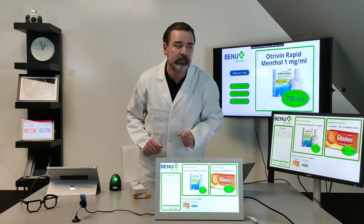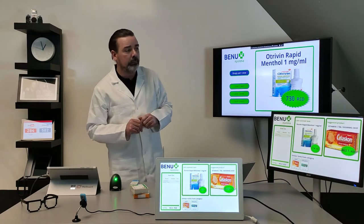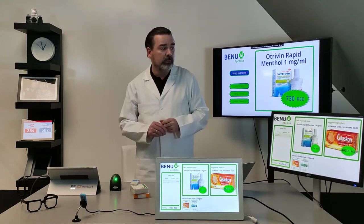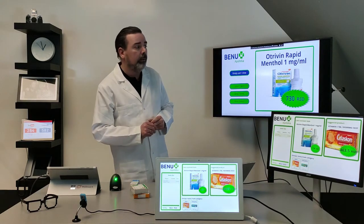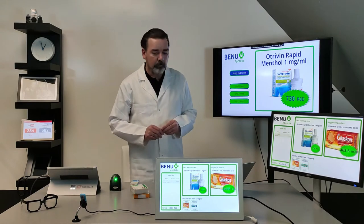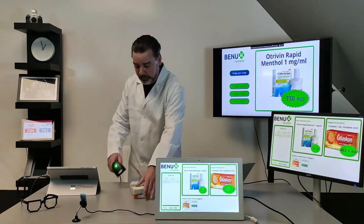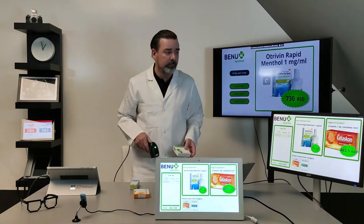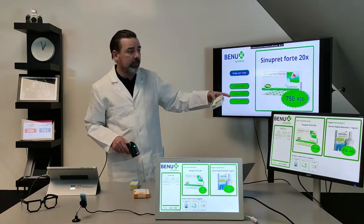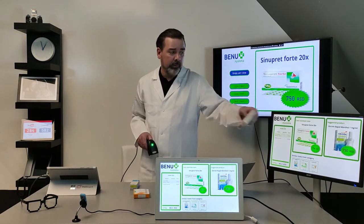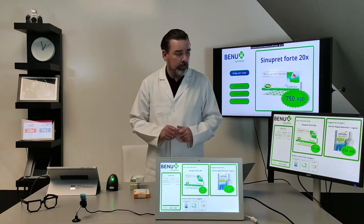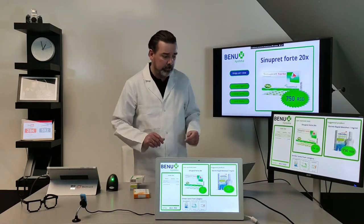And what is the suggested product? So people are buying Otrivin and they also buy Celaskon, or something similar, together with this product. When the next product is read, then this information appears here, this information is delivered there, and we can also display a suggested product.